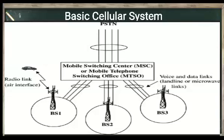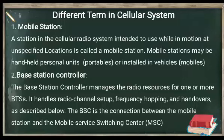Now we discuss basic cellular systems. A basic cellular system must consist mainly of: MTSO (Mobile Telephone Switching Office), base stations (BS), voice or data link lines, and PSTN (Public Switched Telephone Network). MTSO is also known as MSC. The three major blocks are MSC, BTS, and PSTN. A mobile station is a station in the cellular radio system intended to be used while in motion at unspecified locations. Mobile stations may be handheld personal units or installed in vehicles — essentially our mobile or electronic gadget used for communication.